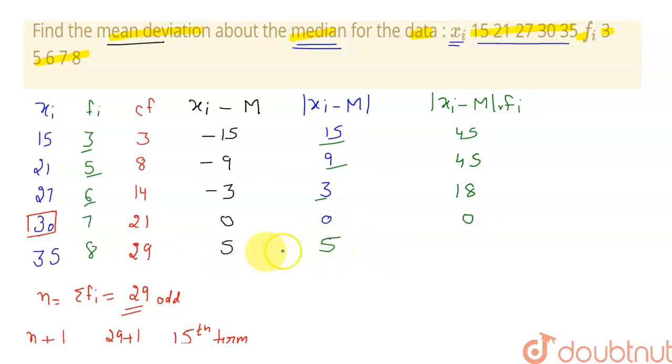Mod of 5 is 5. 5 into 8 will give me 40. Now we have to sum them up. Sum these values. So it will be 5 plus 5, 10, 18, 1, 5, 9, 10, 14.